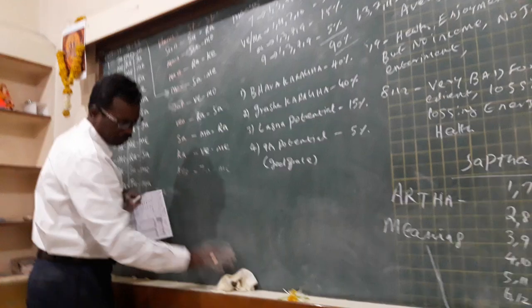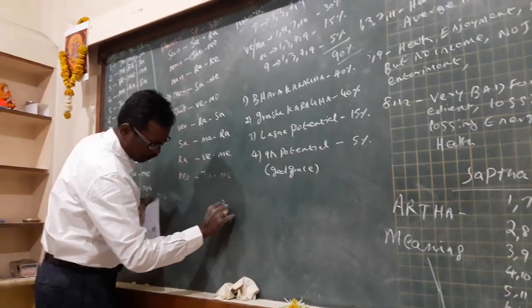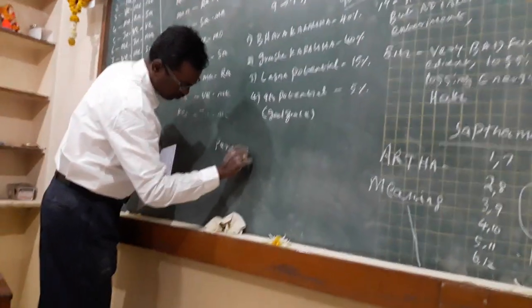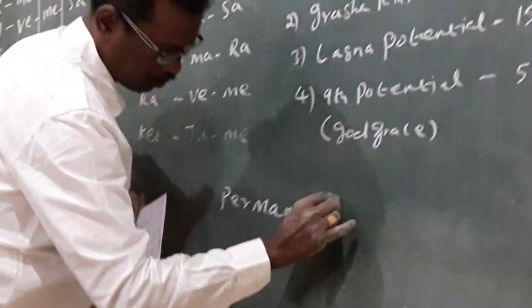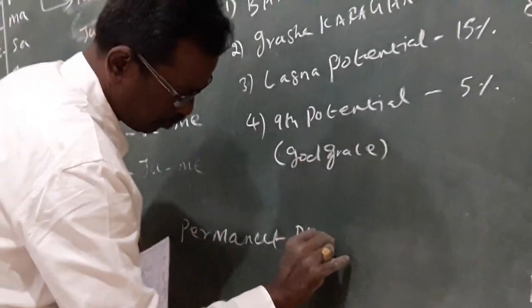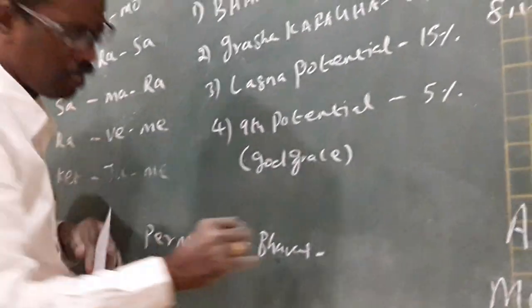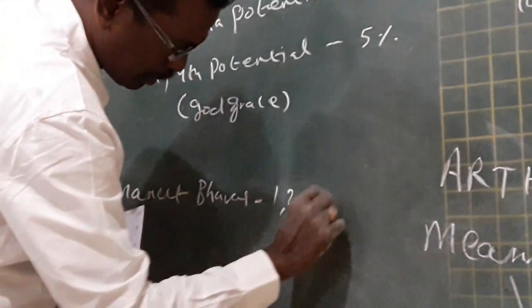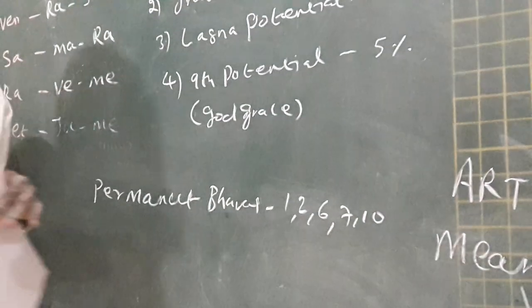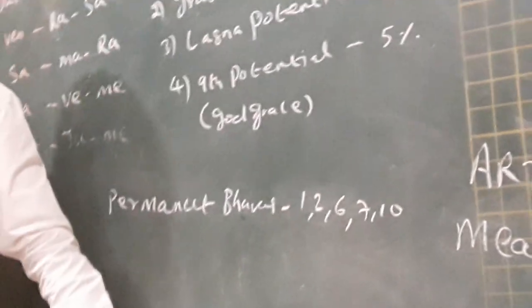Two categories means permanent bhava. Permanent bhava means one, two, six, seven, ten. This is called permanent bhava.